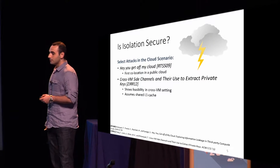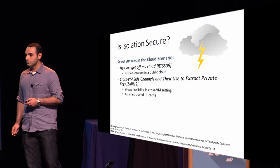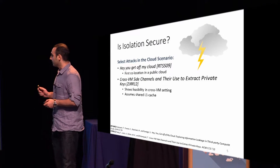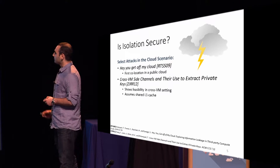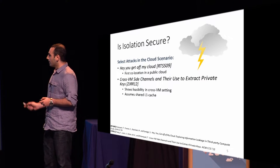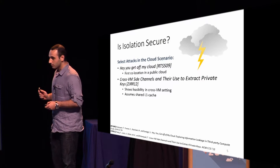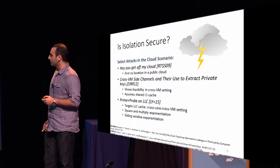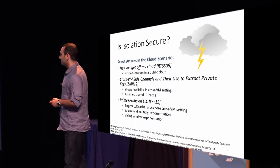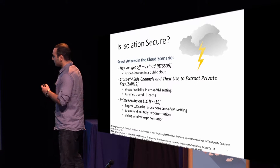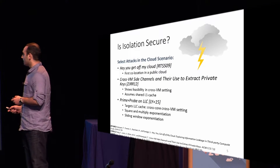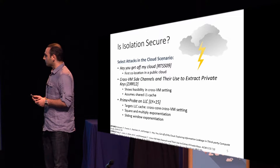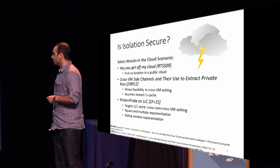The second work is "Cross-VM Side Channels and Their Use to Extract Private Keys" by Zeng et al. It shows the feasibility of performing a cross-VM attack, destroying the isolation barriers between virtual machines, and it assumes a shared L1 cache, which is a strong assumption. Finally, Prime+Probe on LLC by Liu, Yarom, and other researchers targets the last-level cache, enabling an attack that works across cores and across VMs, and it attacks square-and-multiply exponentiation as well as sliding window exponentiation.